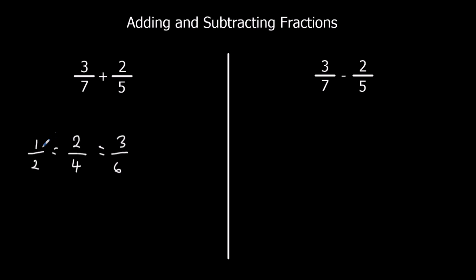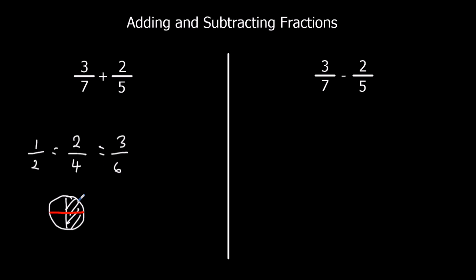As long as we do the same thing to the top and the bottom — so if I times the top and bottom by 2, I get 2 quarters; if I times the top and bottom by 3, I get 3 sixths — but that means the same amount. So as long as I times the top and bottom by the same thing, it's going to be the same fraction — the same amount of the whole. So if I add half a pizza and cut it into 4 pieces, I've now got 2 quarters; the amount of pizza I have doesn't change.